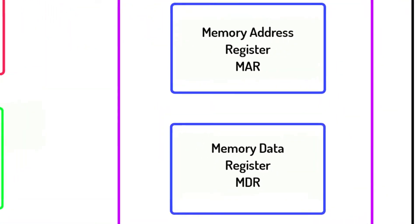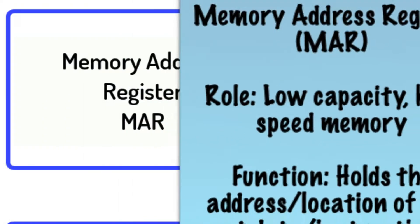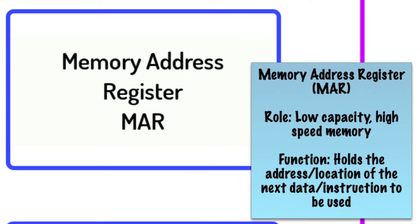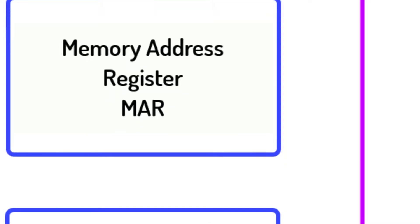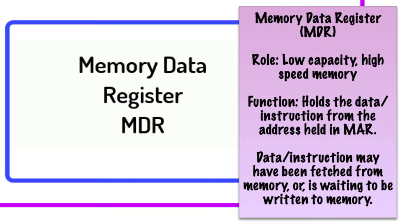Let's now turn to the right-hand side of the diagram and look at two more specialized registers. The memory address register (MAR), as the name suggests, holds the whereabouts or address of either some data or an instruction. The memory data register (MDR) holds the current data that's been fetched from memory or is about to be stored in memory. This is also known as the memory buffer register.